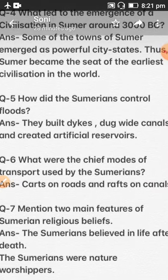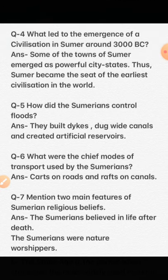Question 4: What led to the emergence of civilization in Sumer around 3000 BC? Answer: Some towns of Sumer emerged as powerful city-states, making Sumer the seat of the earliest civilization in the world. Question 5: How did the Sumerians control floods? Answer: They built dikes, dug wide canals, and created artificial reservoirs. Question 6: What were the chief modes of transport used by Sumerians? Answer: Carts on roads and rafts on canals. Question 7: Mention two main features of Sumerian religious beliefs. Answer: Sumerians believed in life after death and were nature worshippers.